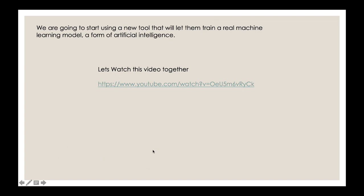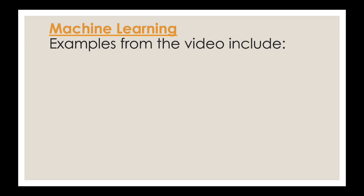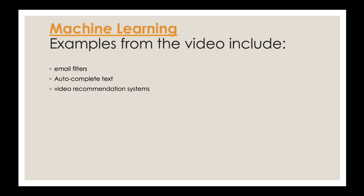That video was interesting. There are many things we learned from it. What is machine learning? You saw some examples in the video. For instance, email filters — when you receive an email and it goes to spam or junk, that happens because of machine learning. Another example is autocomplete text: when you're typing a message on your iPad, it automatically suggests the rest of the sentence or word. That is machine learning. Also, recommendation systems — when you watch a video, the system figures out which videos you like. That is machine learning too.